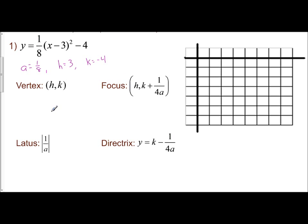Those values allow me to find the vertex, focus, lattice, and the directrix. My vertex is the coordinate h, k. So that's the coordinate 3, negative 4. So let's plot that first — go 1, 2, 3, and then down 1, 2, 3, 4. And so this is my vertex.